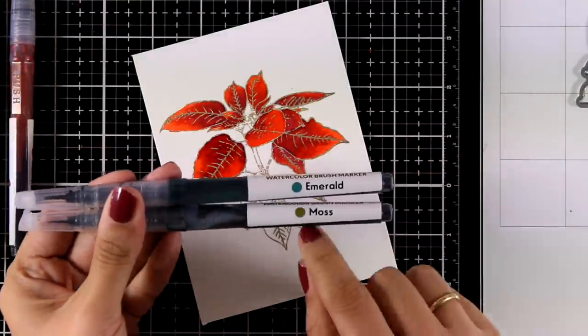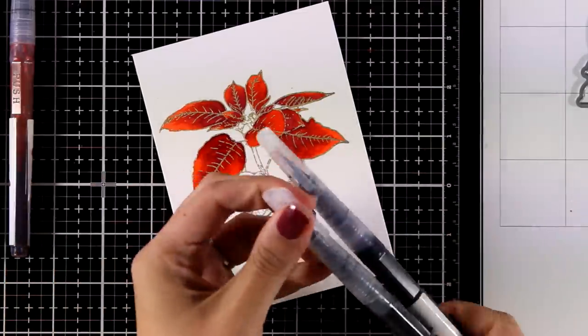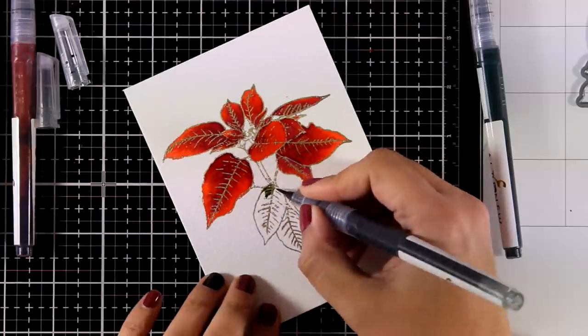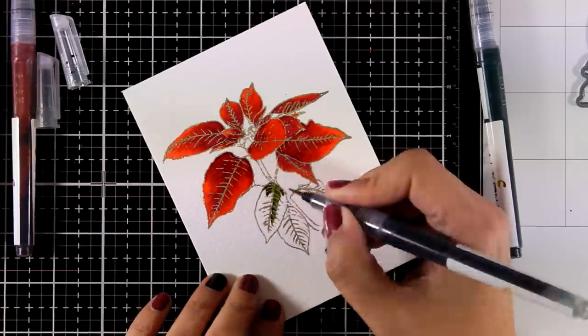Now the leaves at the bottom, I'm going to color them green, so for that I'm using Moss and Emerald. And again, using the same technique, I'm going to mix those colors directly on my leaf.